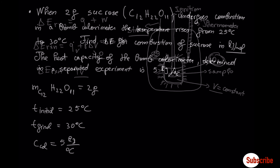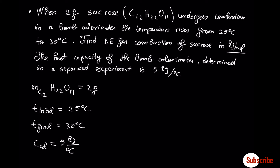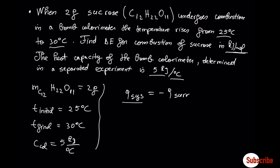Example: when 2 grams of sucrose undergo combustion in a bomb calorimeter, the temperature rises from 25°C to 30°C. Find the change in internal energy for the combustion of sucrose in kJ/mol. The heat capacity of the bomb calorimeter is 5 kJ/°C. Q of the system equals minus Q of the surrounding. The system is the sample in the chamber; the surrounding is the calorimeter that absorbs the heat released by the combustion.